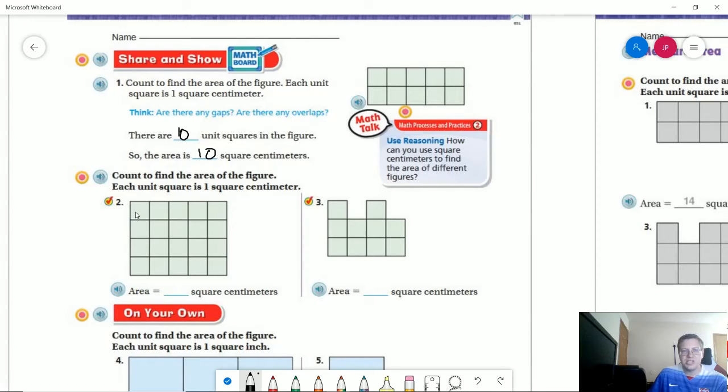Number two, we could do the same thing and that would give us four, eight, twelve, sixteen, twenty. For this one, do we have gaps? Well, yeah, we do. We have a gap here and we have a gap here. So we can't do three times four to figure out the answer.